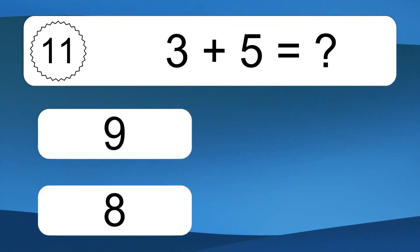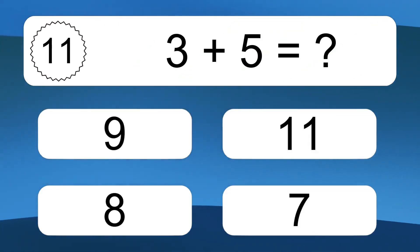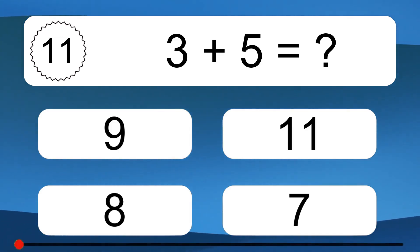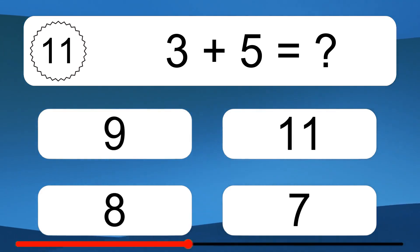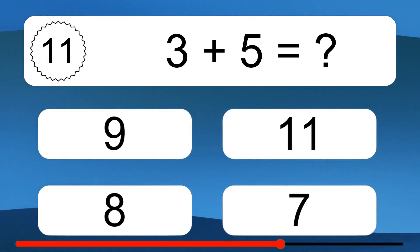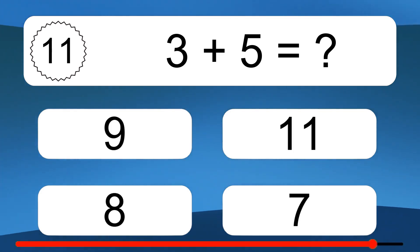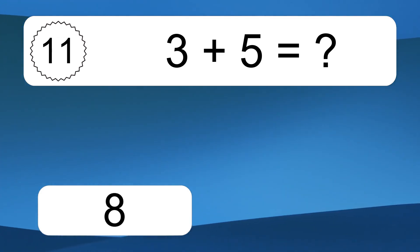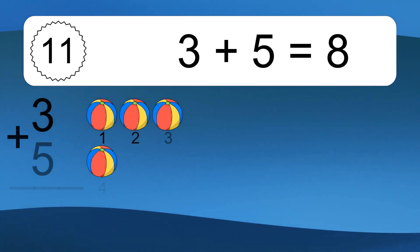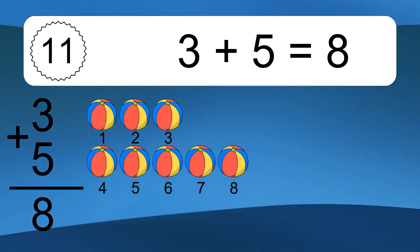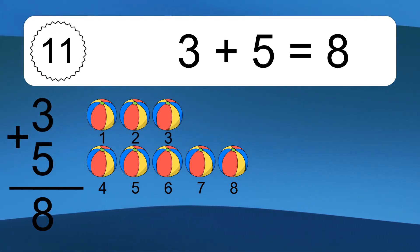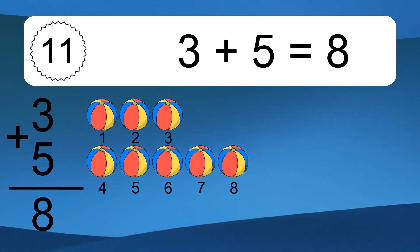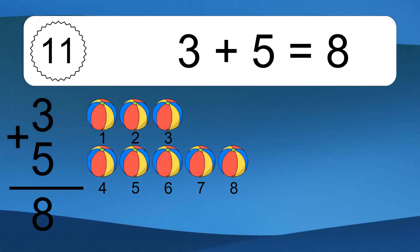3 plus 5 equals what? 3 plus 5 equals 8. Let's count it. 1, 2, 3, 4, 5, 6, 7, 8.